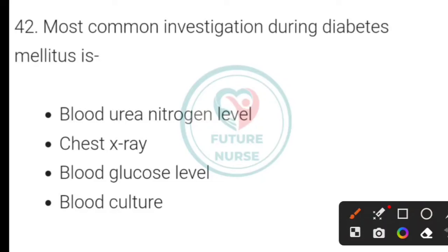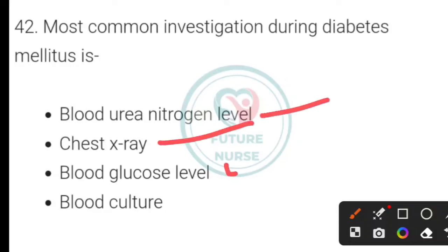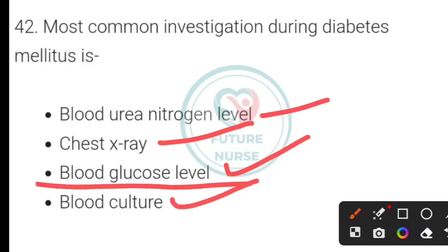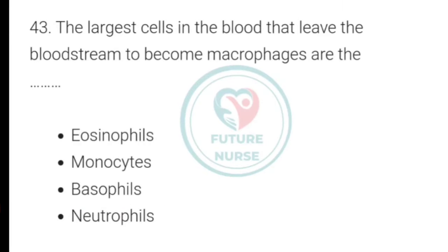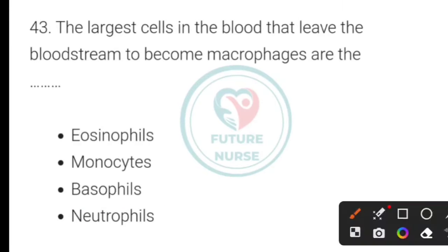The most common investigation used during diabetes mellitus is which of the following? Options: blood urea nitrogen level, chest X-ray, blood glucose level, or blood culture. The correct answer is blood glucose level.